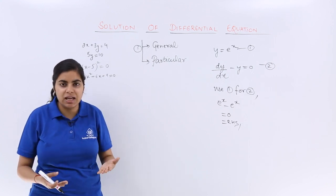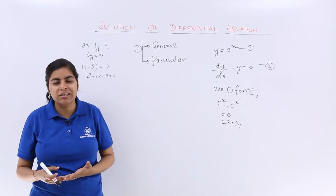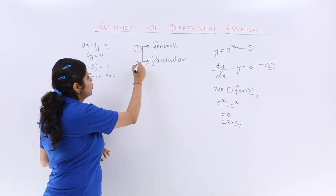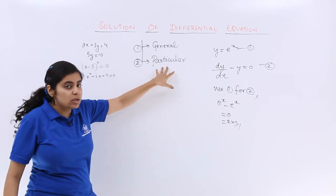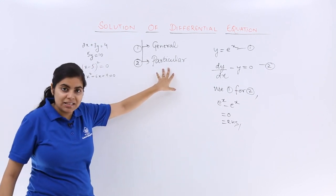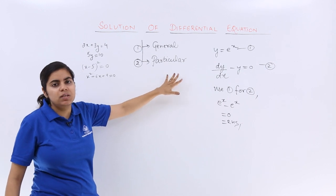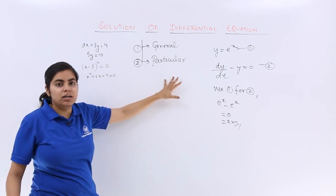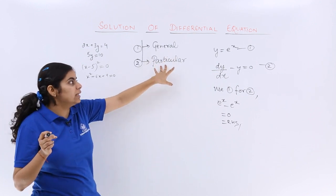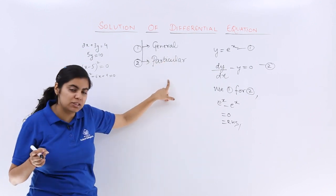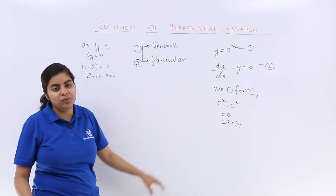We'll see with the help of an example. First, I'm just narrating the definition. The second is a particular solution. A particular solution, as the name suggests, is one wherein we have assigned specific value to the arbitrary constants. The value has to be very specific with regard to the particular solution.